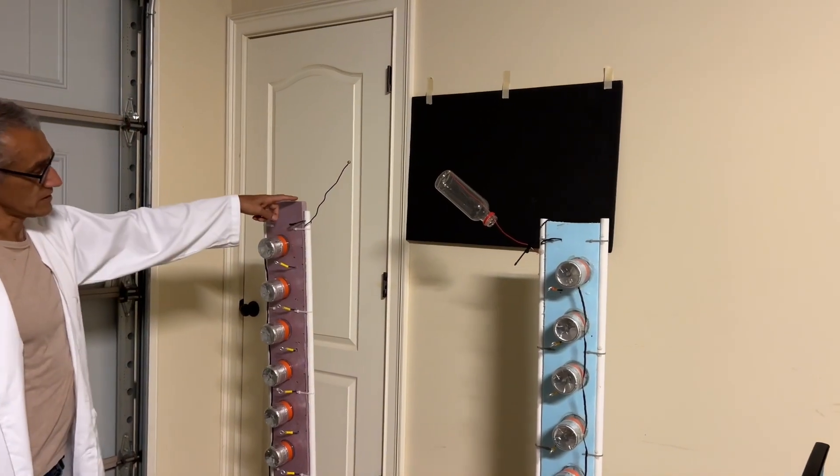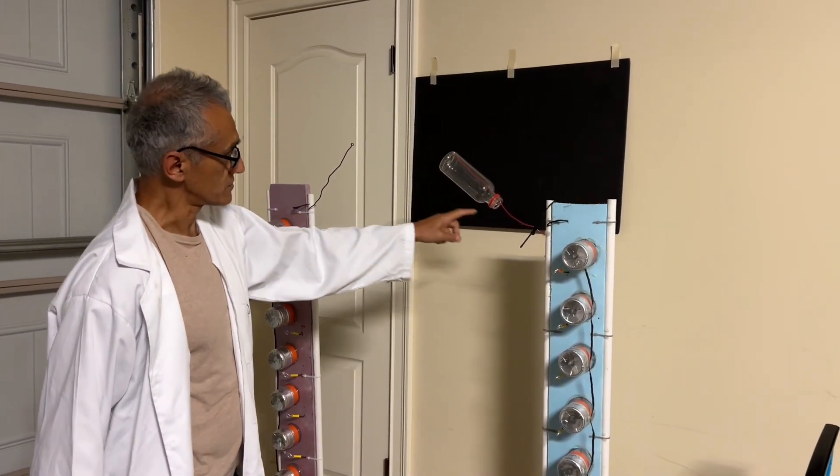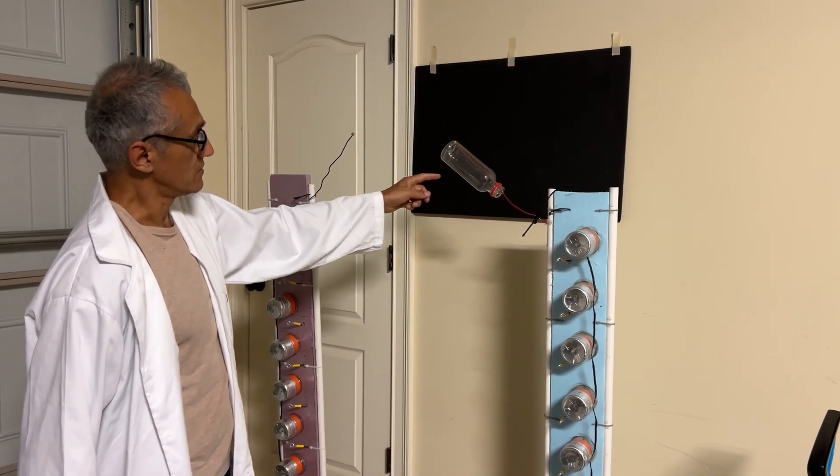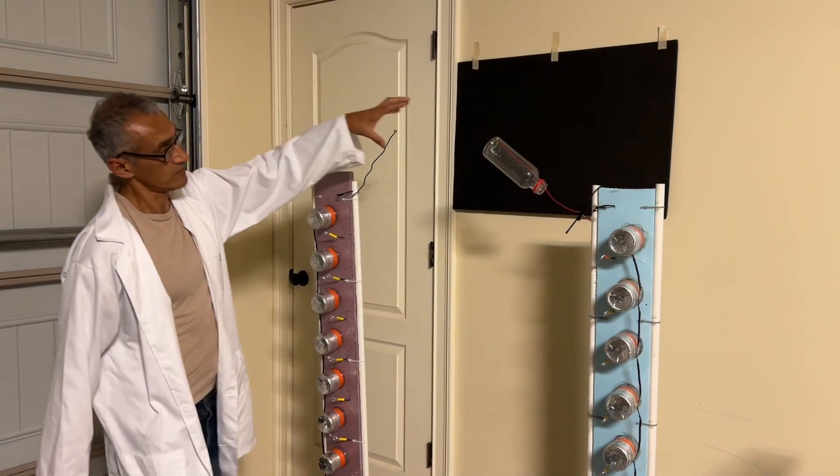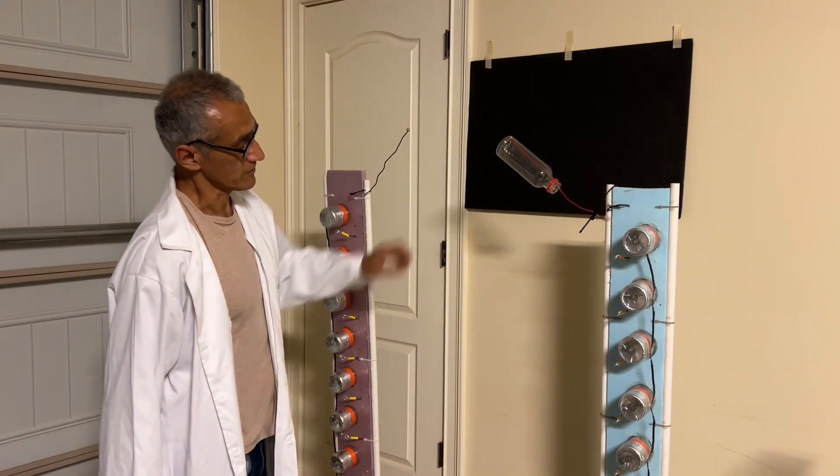And this side is negative, and this side is positive, so with the bottle like that, the inside of the bottle is going to get positively charged, and the outside of the bottle is going to become negatively charged.